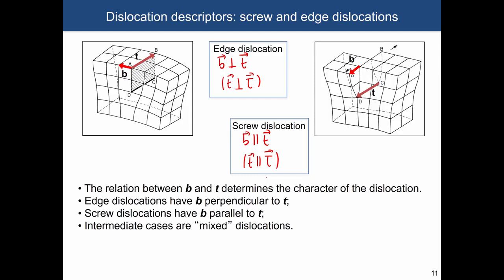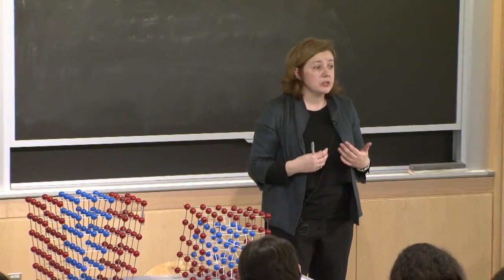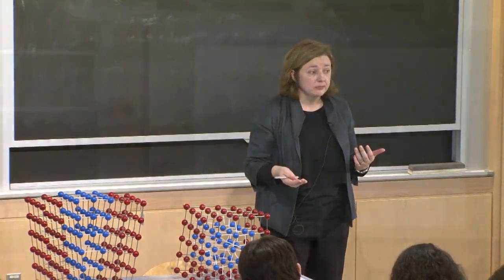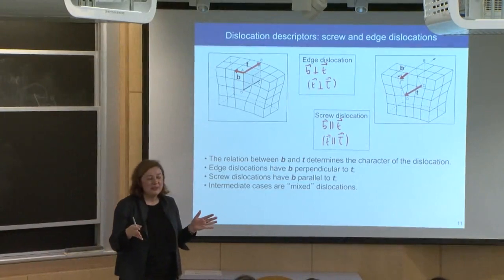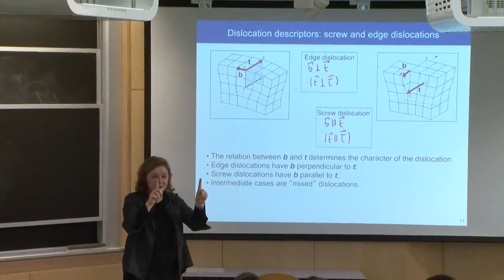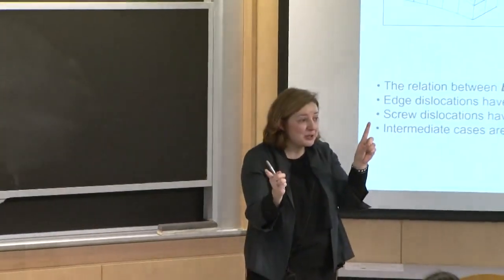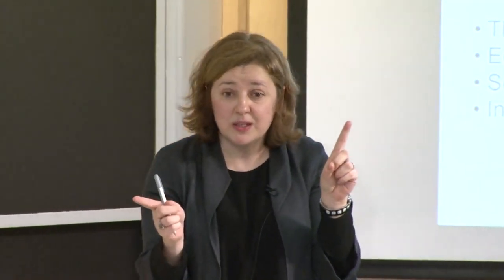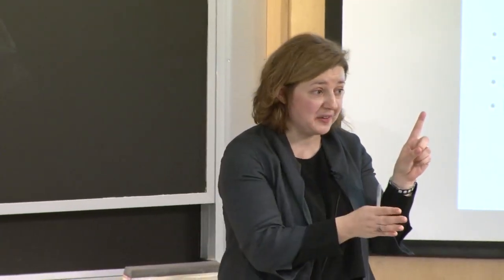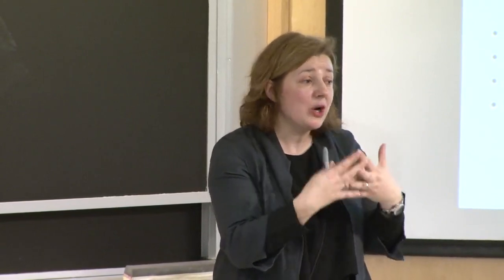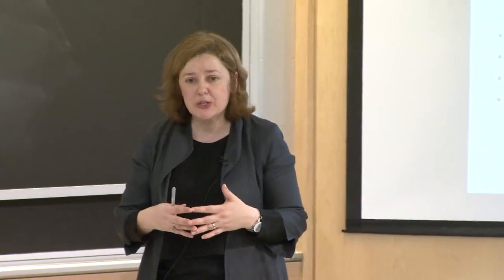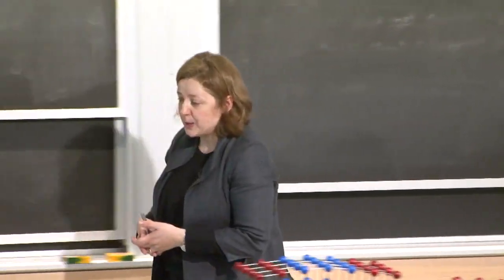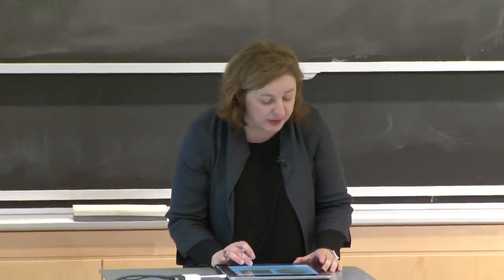These are the two major types of dislocations. There are many types that have mixed character. A mixed dislocation occurs when the Burgers vector and dislocation line have any arbitrary angle — neither parallel nor perpendicular. This means it has in part edge and in part screw character. Screw and edge dislocations can have very different properties in materials, and mixed dislocations have character in between.